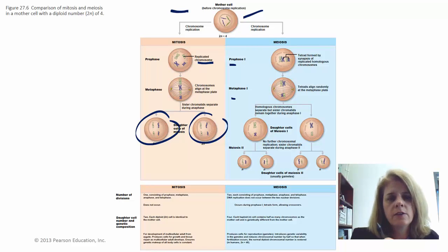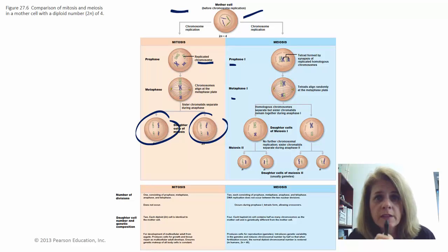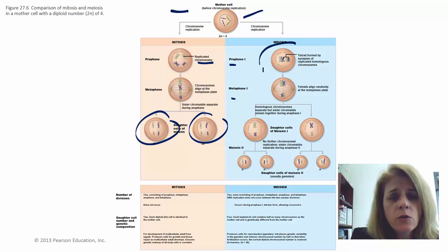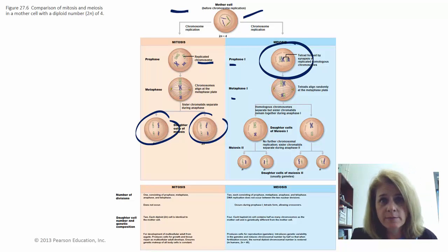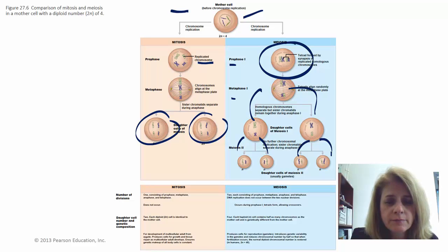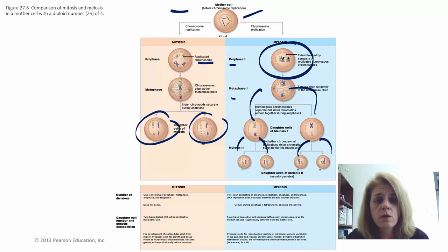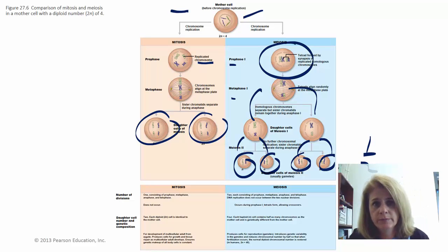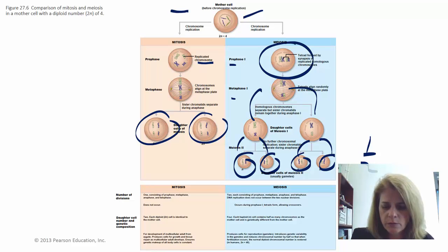In meiosis, we need to end up with half the amount of genetic material. You replicate the DNA but then split it twice — you double the DNA, split it, and split it again. You wind up with four daughter cells with half the amount of genetic material as the mother cell. That's the key difference between meiosis and mitosis.